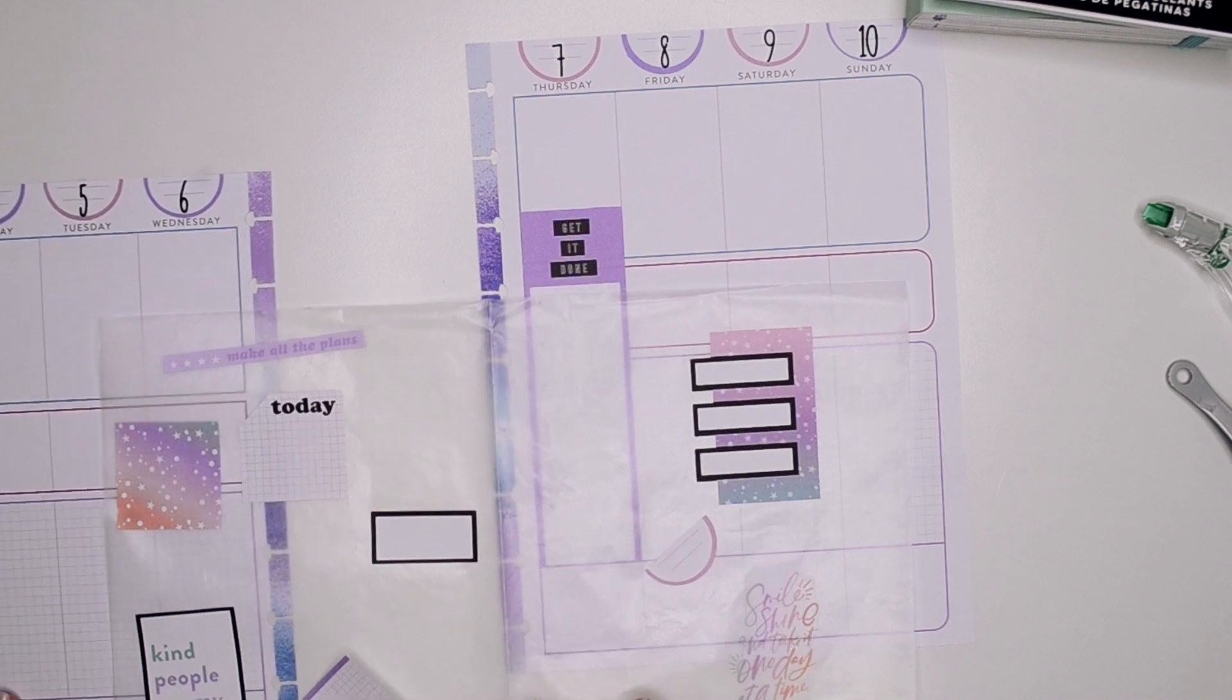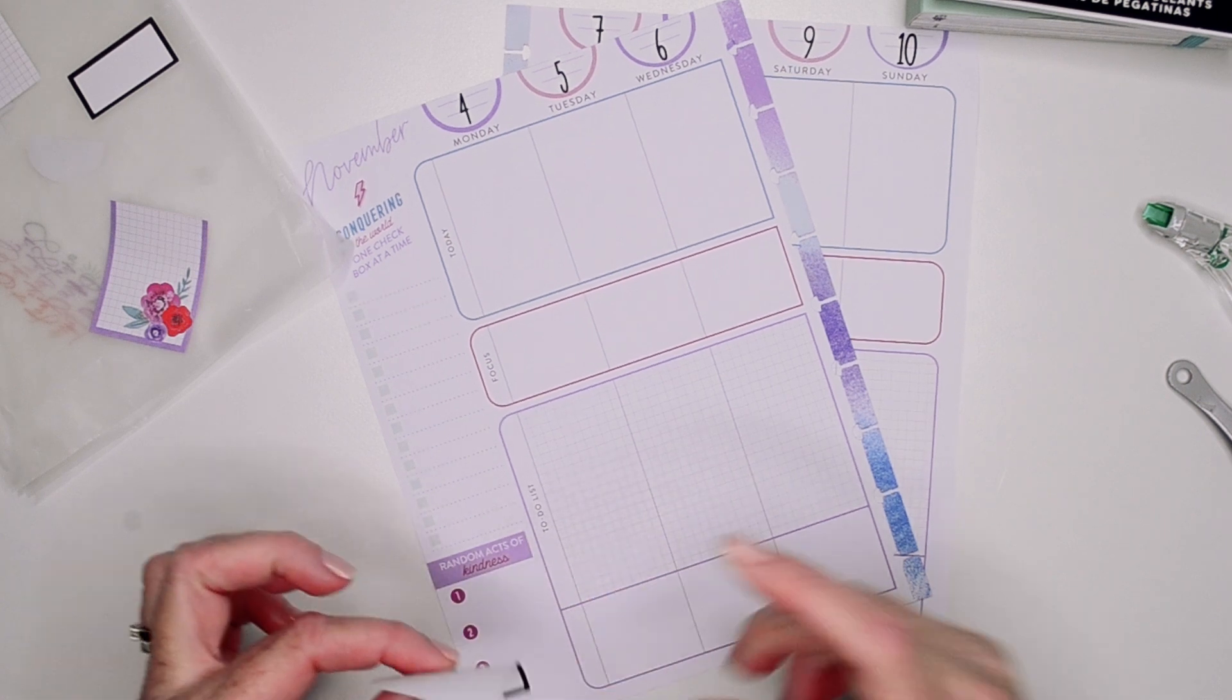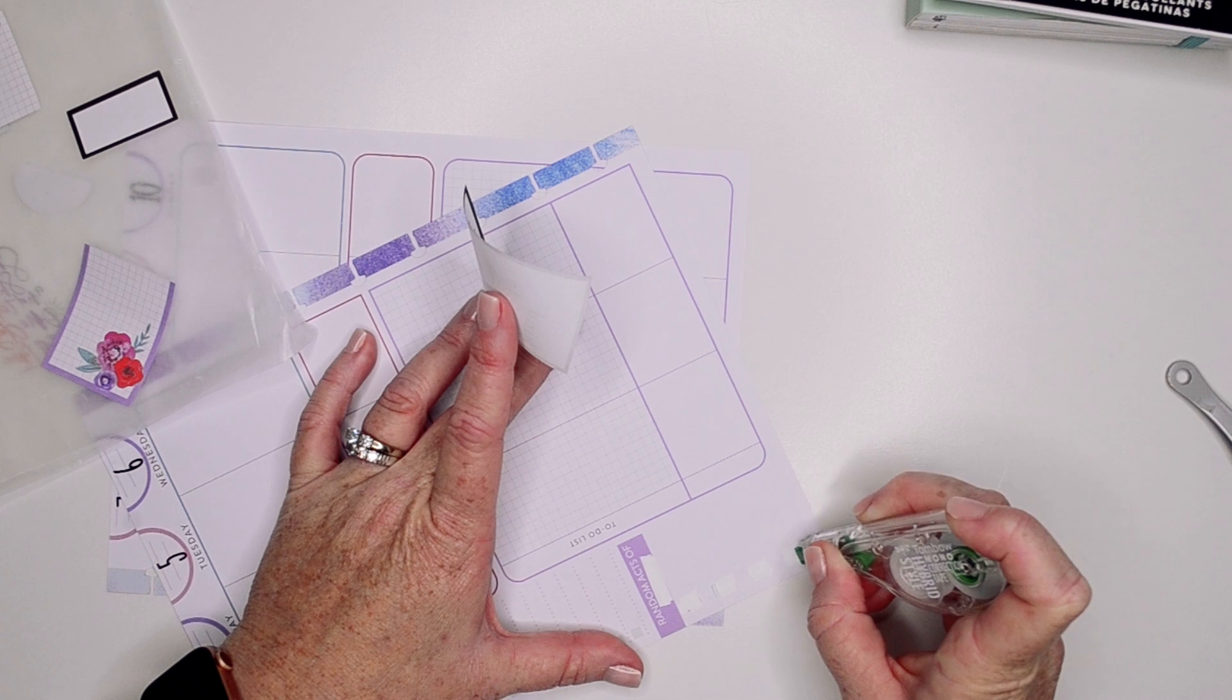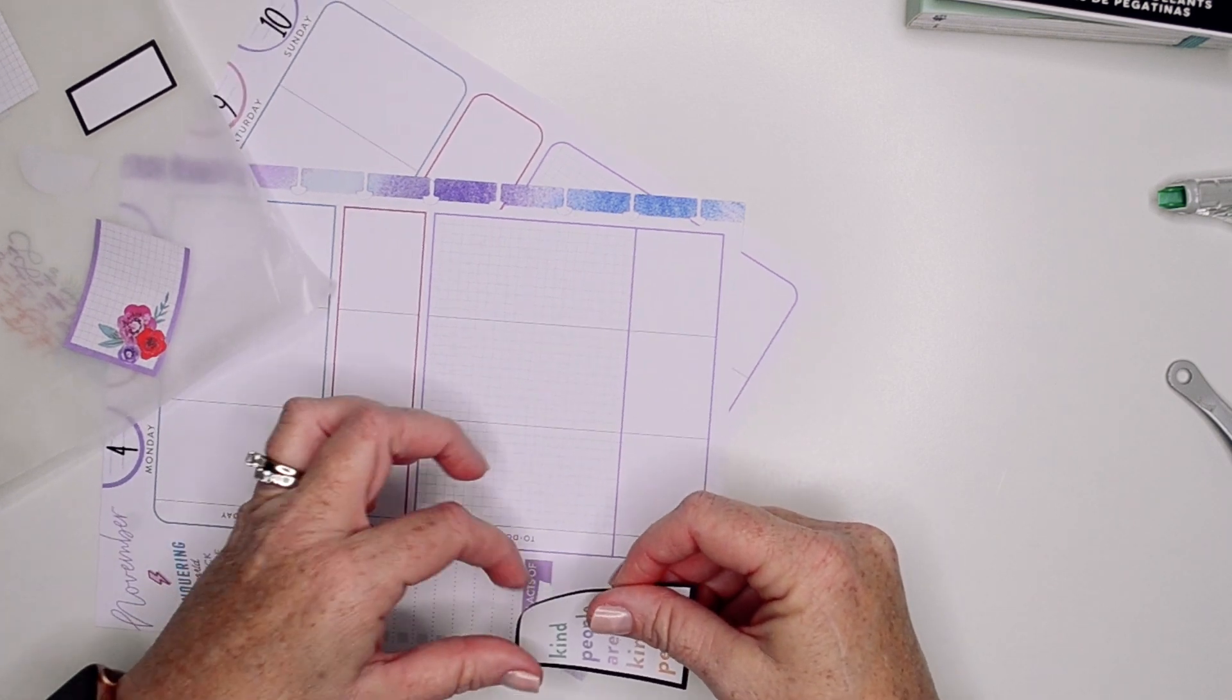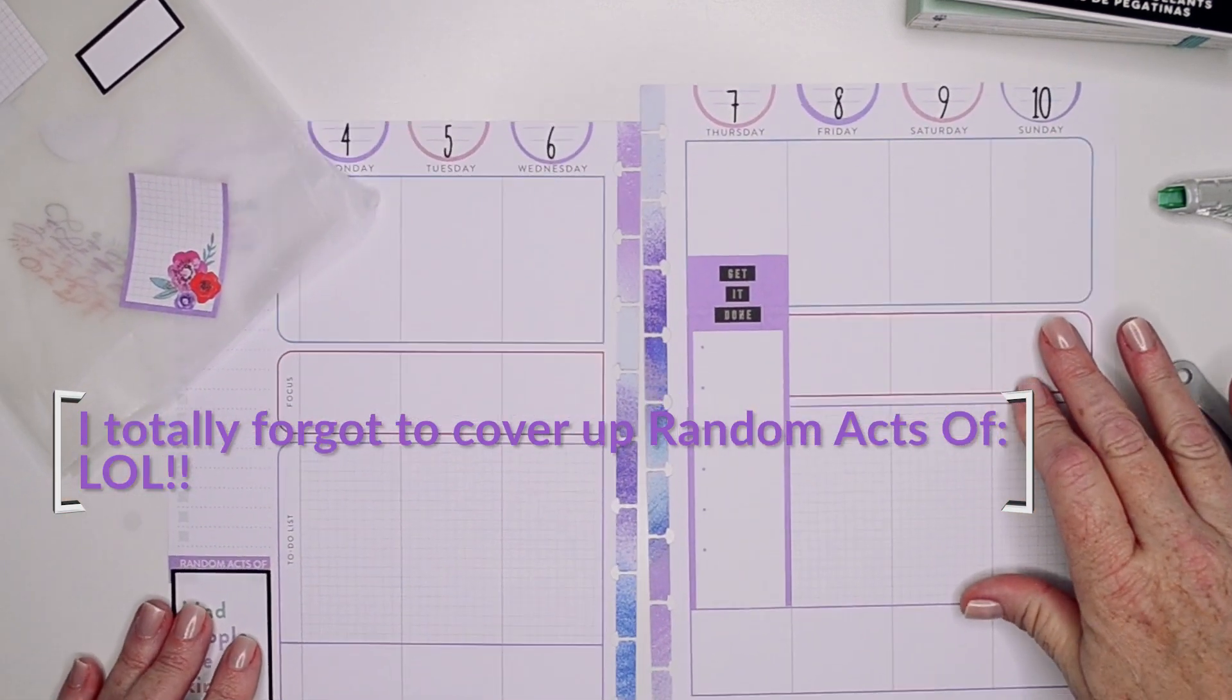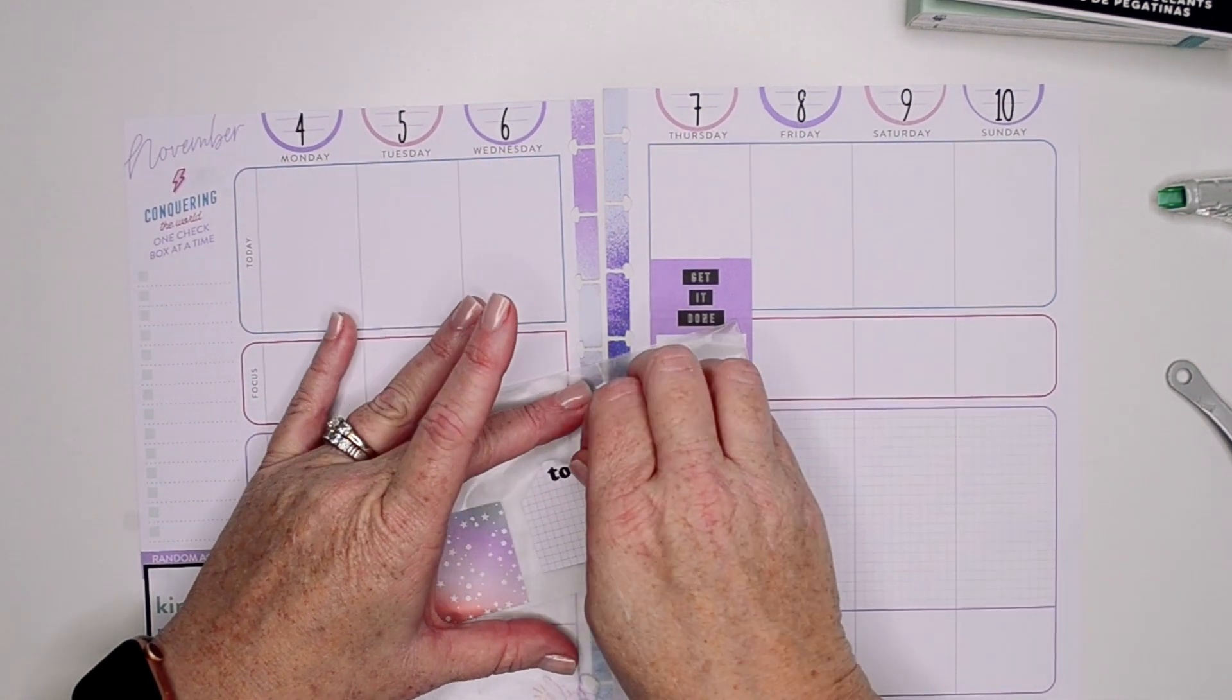So that is going to be my starting box and then I'm going to go back to the first of the week because I was going to put this sticker that says kind people are my kind of people down here. I'm going to white out all the pink on the random acts of kindness so that it doesn't show through. I did that because I have black over here, so I wanted black over here and then I thought it would be cute to come in with some black colorful boxes as well.